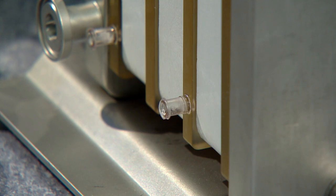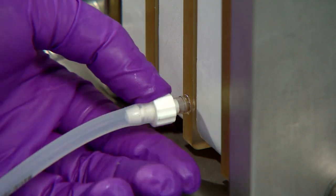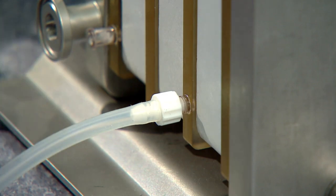The permeate lines are opposite of the retentate ports. Install permeate collection tubes on each port.